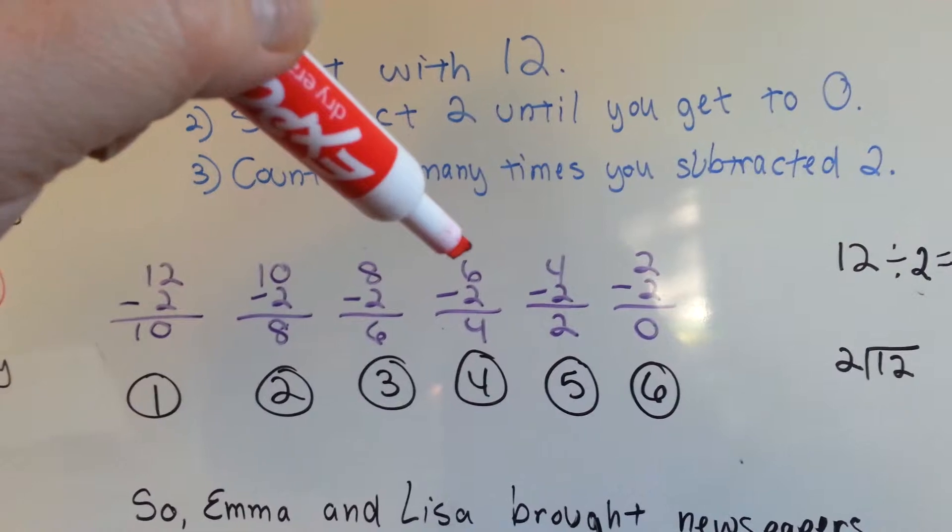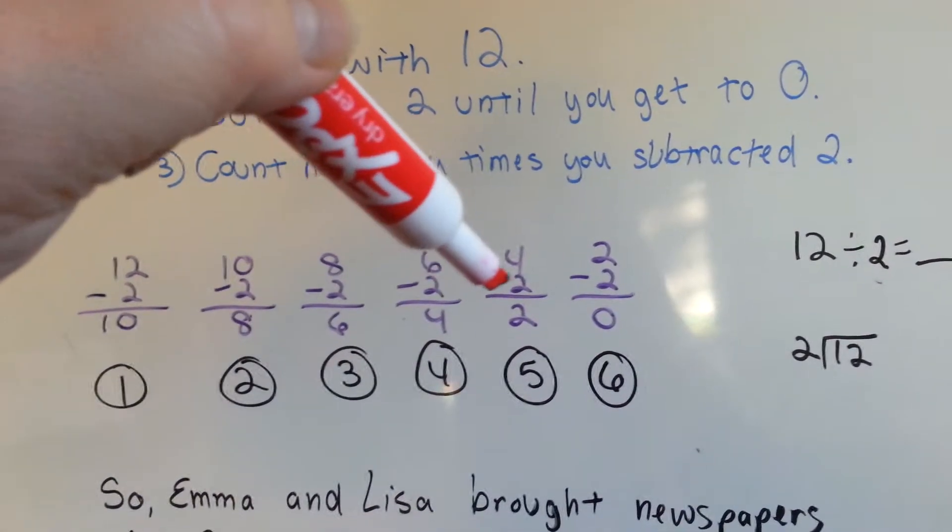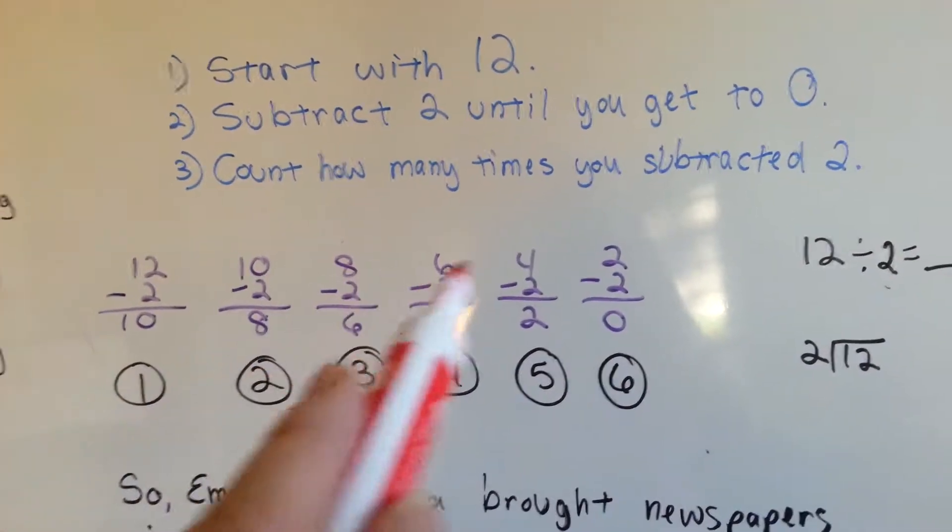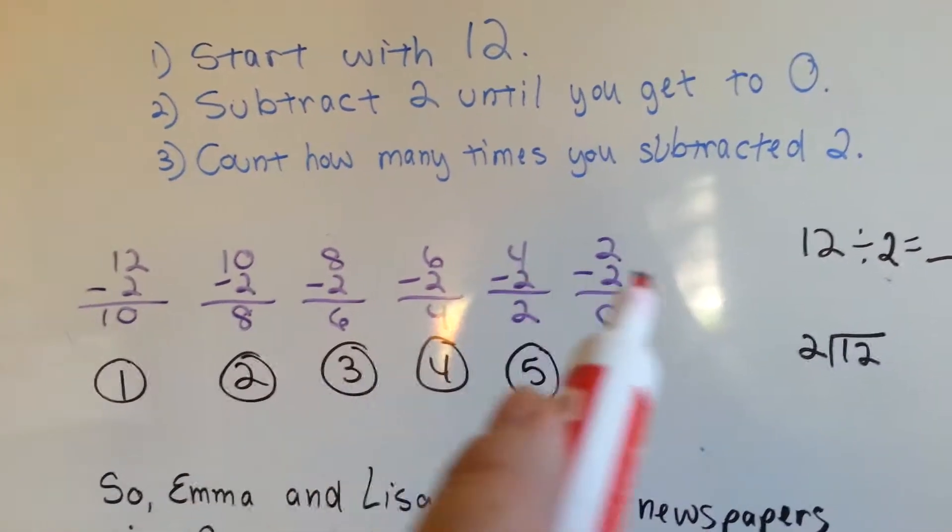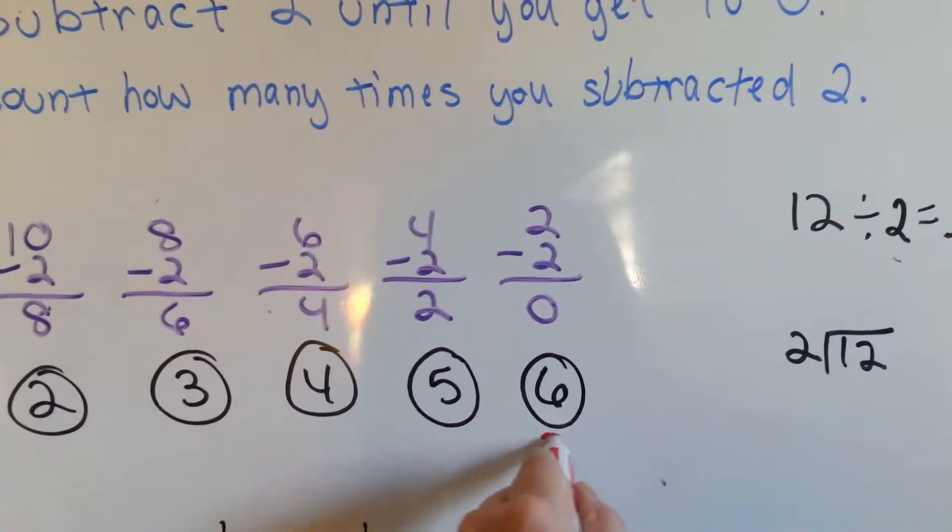The next day, the six take away two is four, the next day is four newspapers take away two, and the next is two take away two. So we were able to take away two newspapers a day to figure out how many days, and it turns out it was six days.